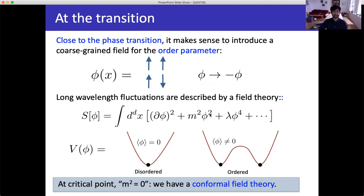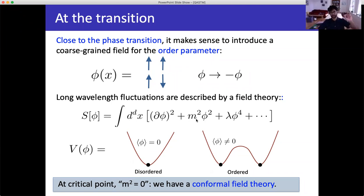At the critical point, this field theory has two different phases. If M² is positive, the potential has a unique minimum, phi rolls down and its VEV equals zero — the symmetry is unbroken. If M² is negative, you have a double-well potential, phi rolls to the bottom, and the VEV of phi is not zero — the symmetry is spontaneously broken. At the critical point where M² equals zero, right between the two transitions, we have a conformal field theory describing the phase transition. For the 2D Ising model, that CFT is the normal 2D Ising CFT.